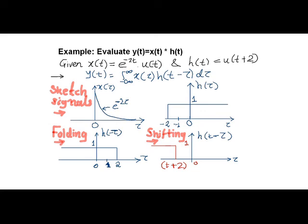Then we sketch both of the signals. x of t, that is x of tau, is our exponential function. h of tau is a unit step function which is coming 2 units earlier than tau equal to 0.